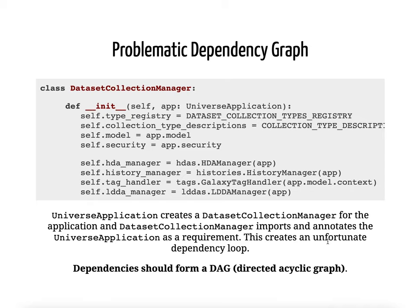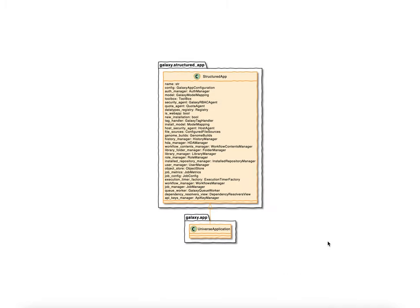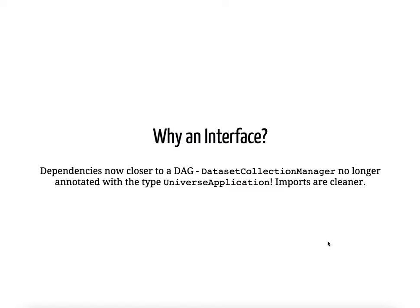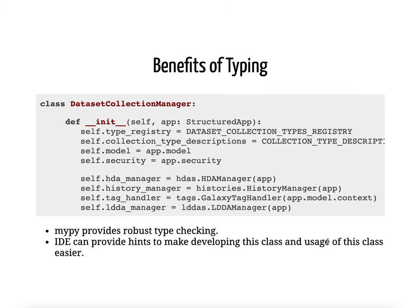In the longer version of this, I go through one typing scheme we could have used for app, but I'll skip for expediency's sake to the structured app that we did end up using. It's an interface, and we use this interface to make the imports cleaner and try to get closer to a directed acyclic graph for the components of Galaxy's backend. We can now, with MyPy and typing, say app is a structured app, and we now have MyPy providing type checking inside of here, and the IDE can provide type hints — for example, that app.model exists.